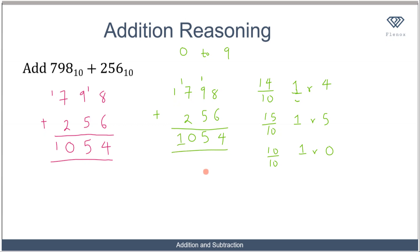So in general, when the sum of two numbers exceeds the range allowed by that base system, you divide it by the base to express the number in terms of a whole number and a remainder. You write the remainder down and take the whole number to the next place value.